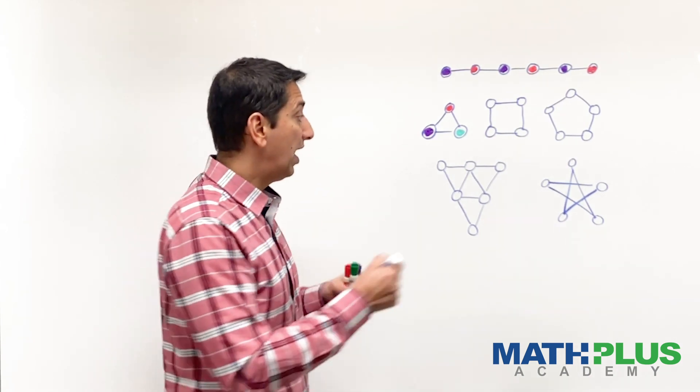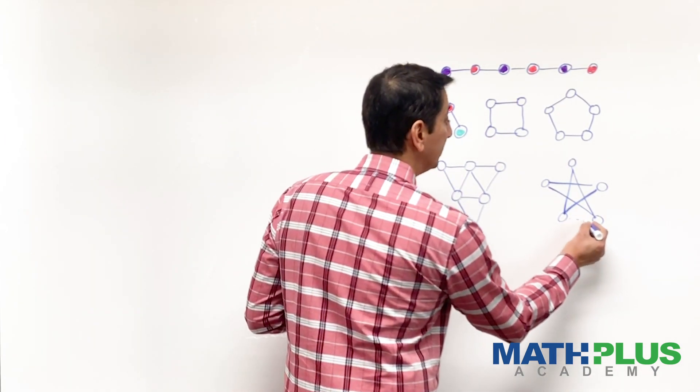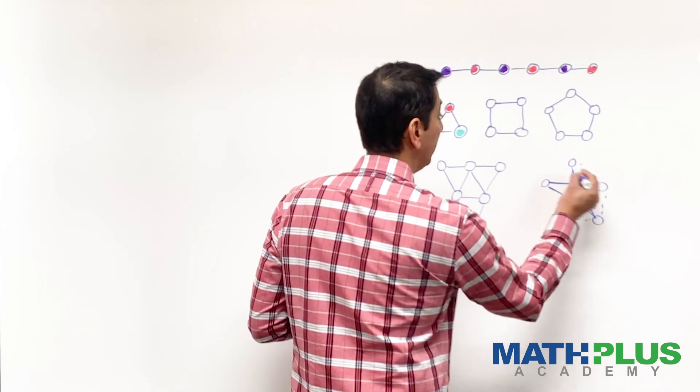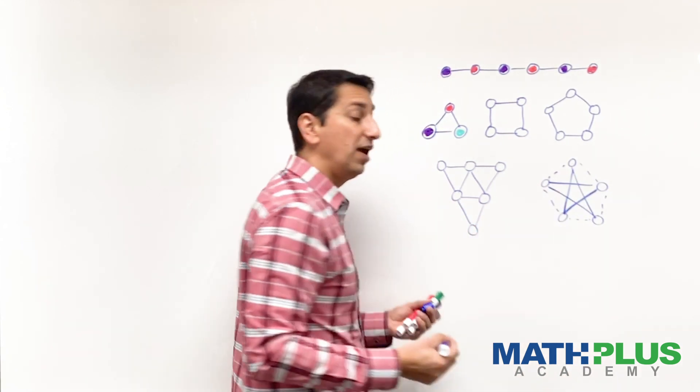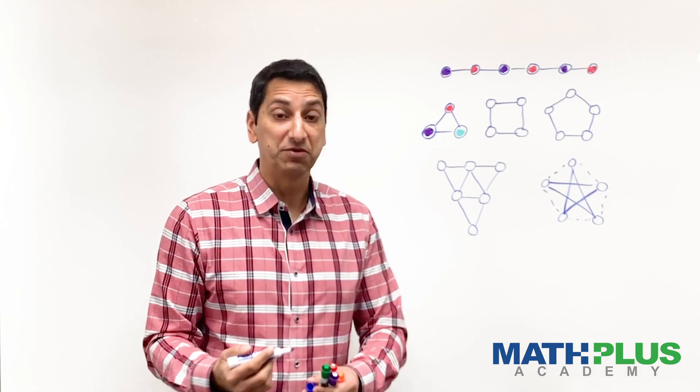And then even more, I could even add more lines. Maybe I could add this and that. I could add this back in. And that's another one. Does that have the same chromatic number?